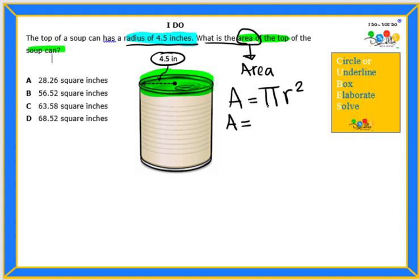The area is pi which we are going to use 3.14 times the radius which is 4.5 and we square that. So if we extend that out, what that means is 3.14, that's the pi, times 4.5 squared means 4.5 times 4.5.